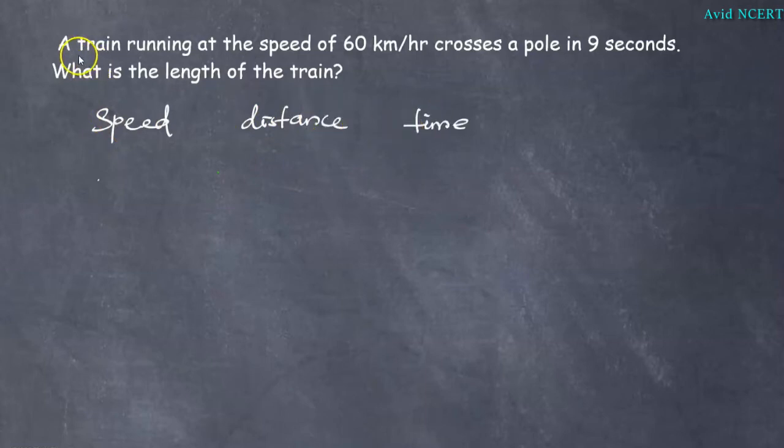From this first sentence, we know the train is running at a speed. The speed is given here, which is 60 kilometers per hour, and it crosses a pole in 9 seconds.